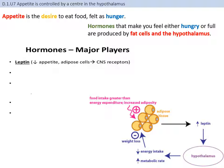Leptin is an appetite repressor. Adipose tissue releases leptin, which travels through the blood up to sensors in the hypothalamus. This causes the hypothalamus to downgrade the feeling of hunger — a negative feedback system. When you eat a large amount of food, it gets digested, absorbed, and stored in adipose tissue, which then releases more leptin as the fat cells increase in number and volume.